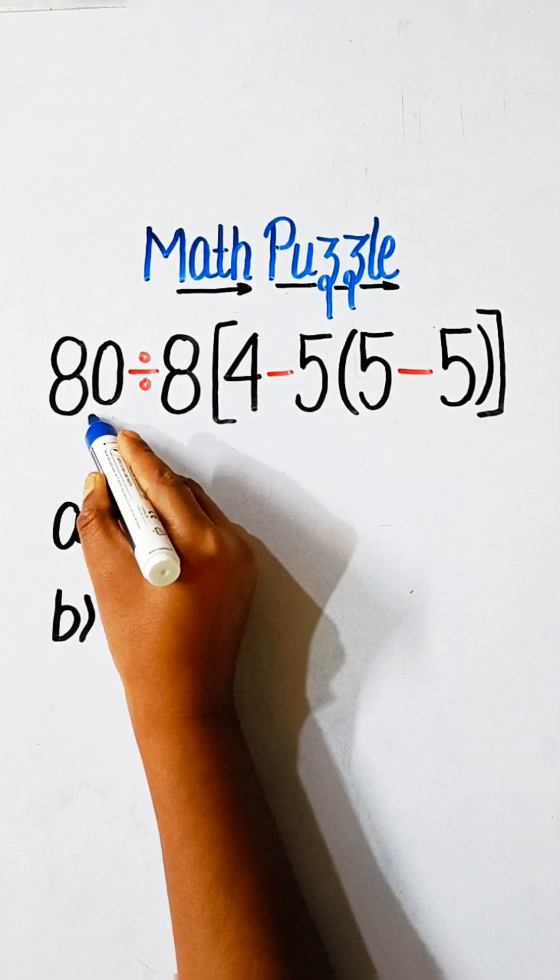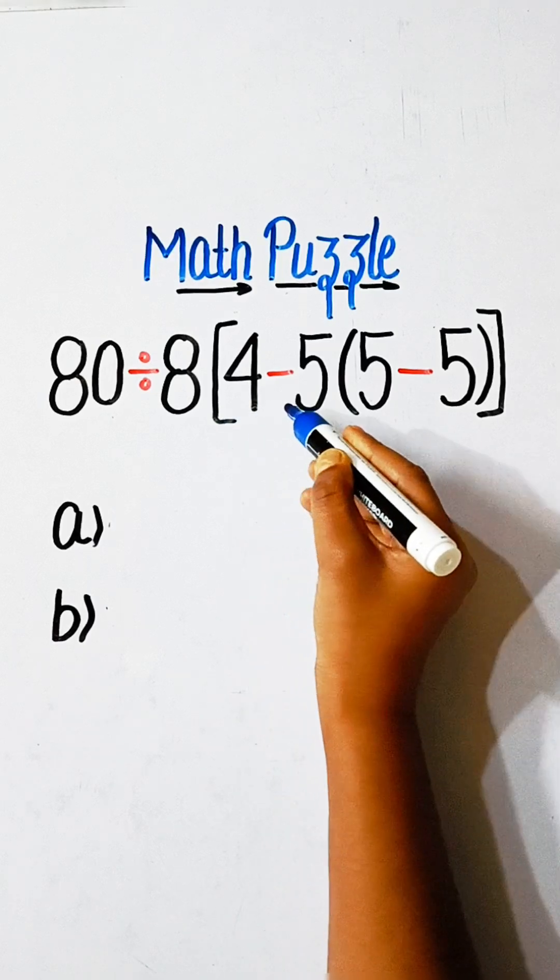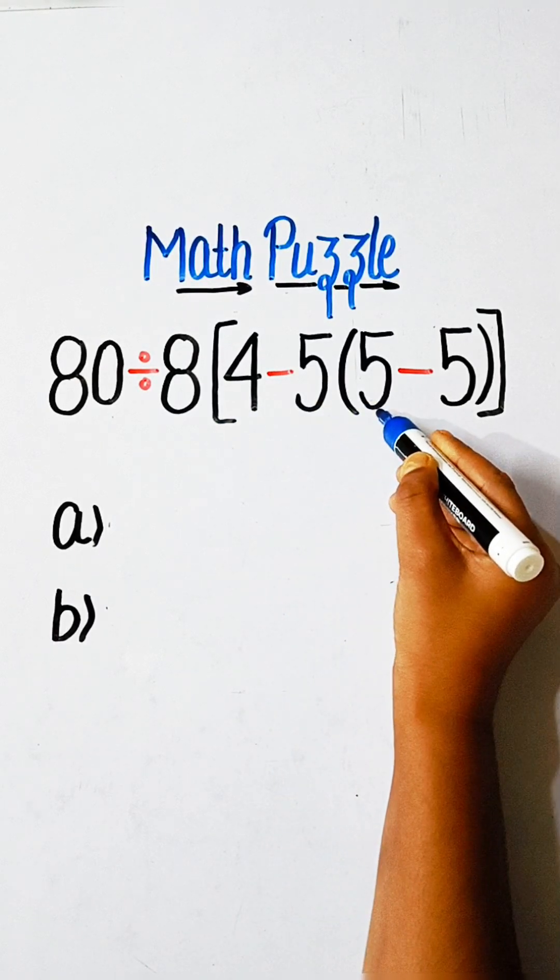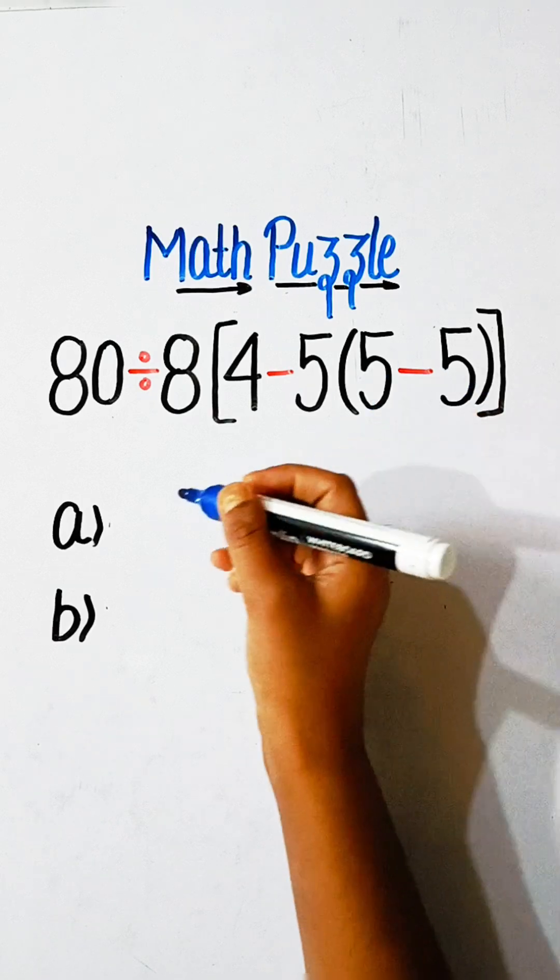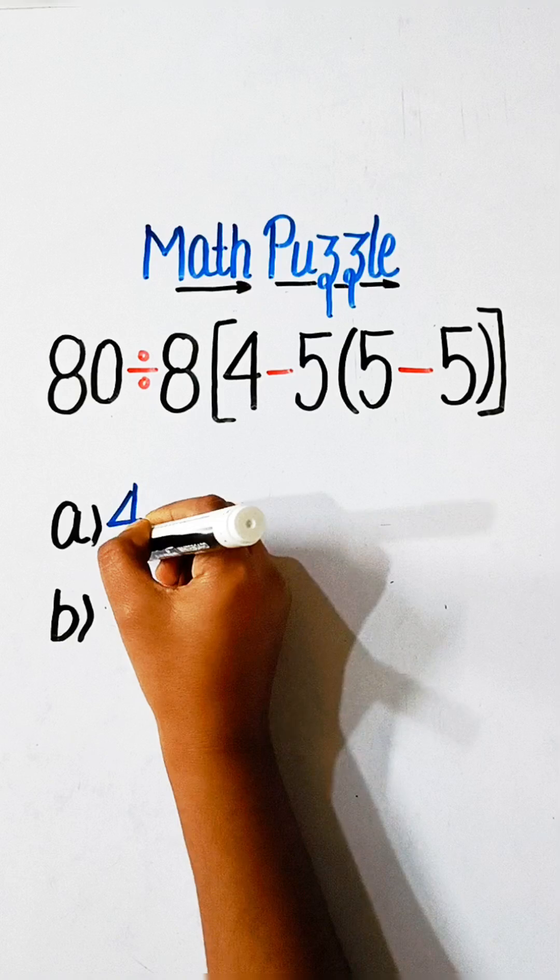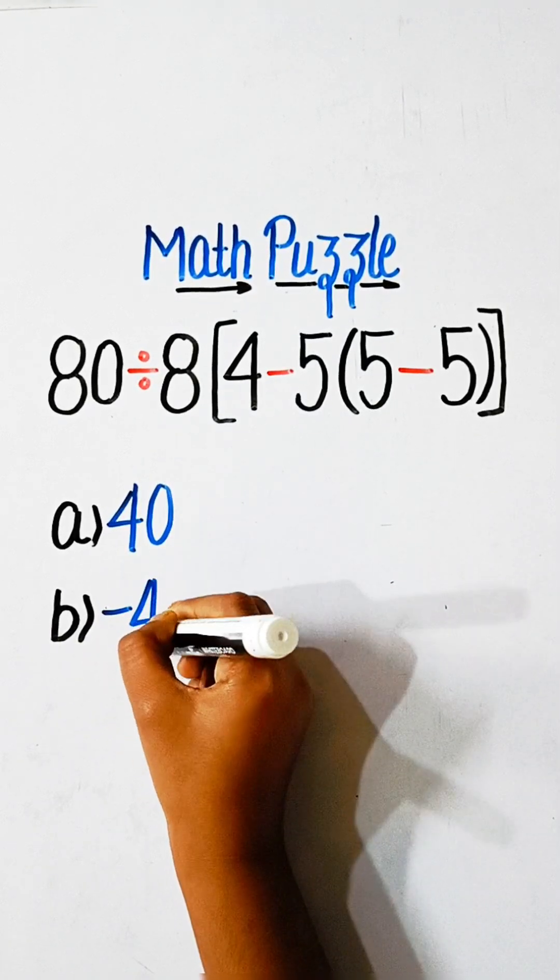So 80 divided by 8 multiplied by 4 minus 5 into 5 minus 5 equals a. Option a is 40, option b is minus 40.